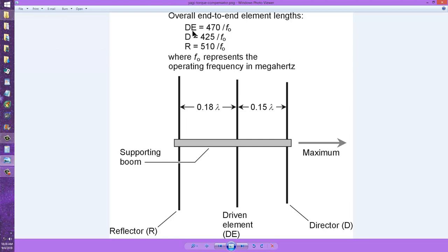DE is the driven element length in feet. D is the director element in feet. And R is the length of the reflector element in feet, from end to end.